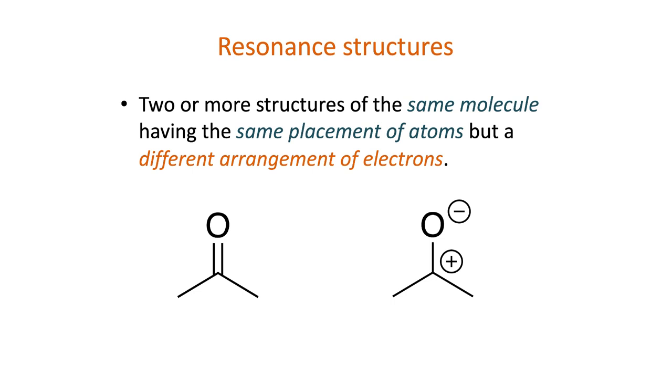Resonance structures represent how electrons are delocalized through all or part of a molecule, but it's important to know that these structures don't actually exist individually, and the electrons are not switching places as indicated. Instead, the true molecule is a blending, or hybrid, of resonance structures. We draw resonance structures to help us understand the stability and reactivity of a molecule.